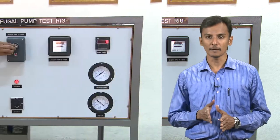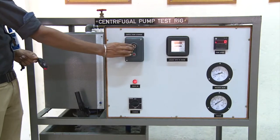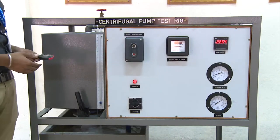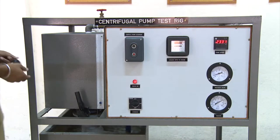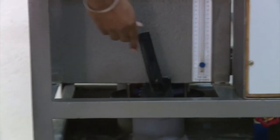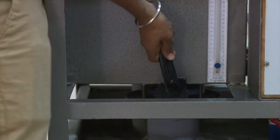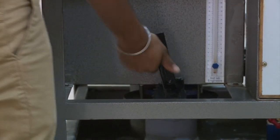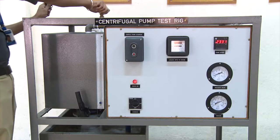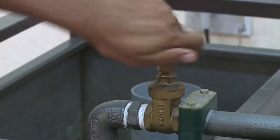First, keep the centrifugal pump delivery gate valve closed, then switch on the centrifugal pump. Open the delivery valve slightly so that the delivery pressure is readable.